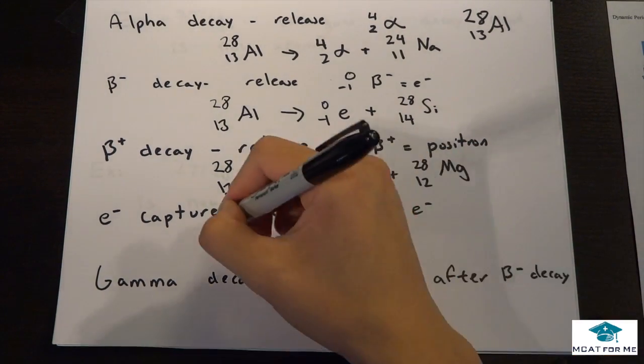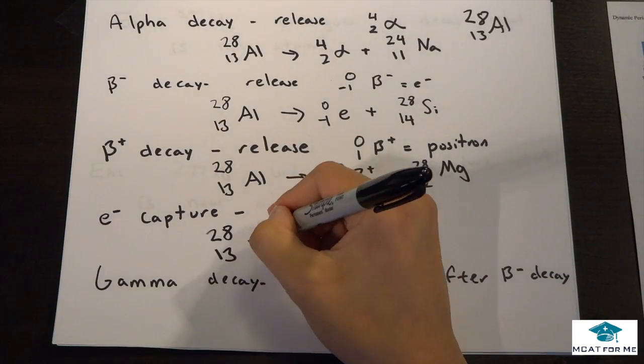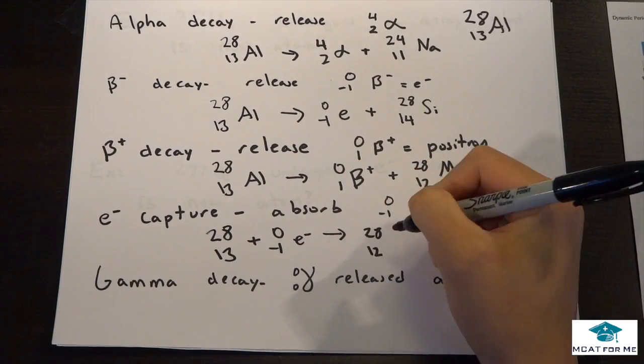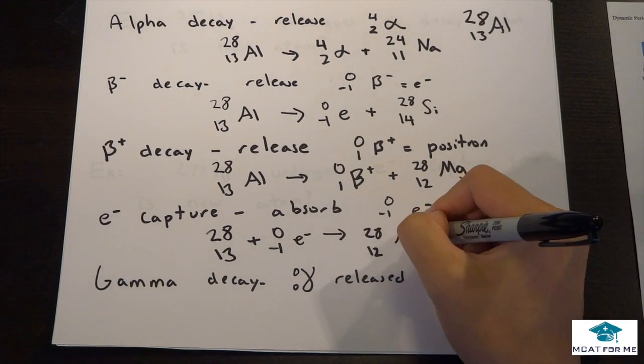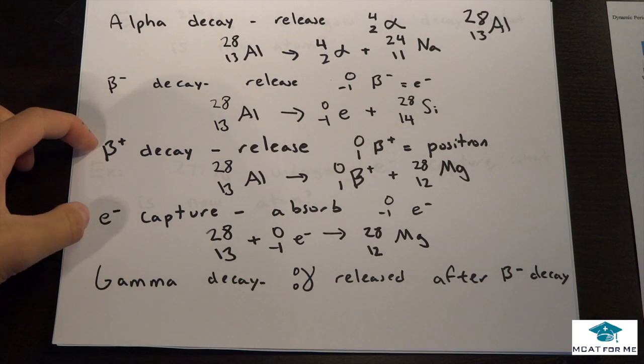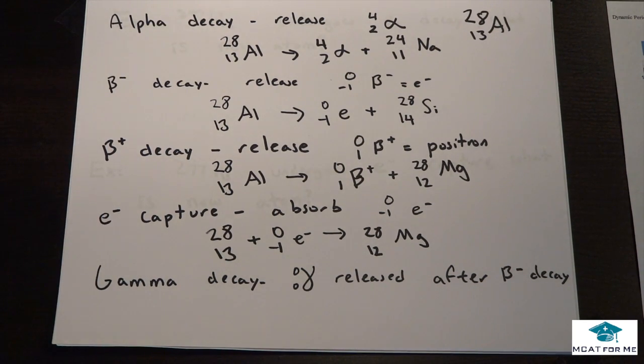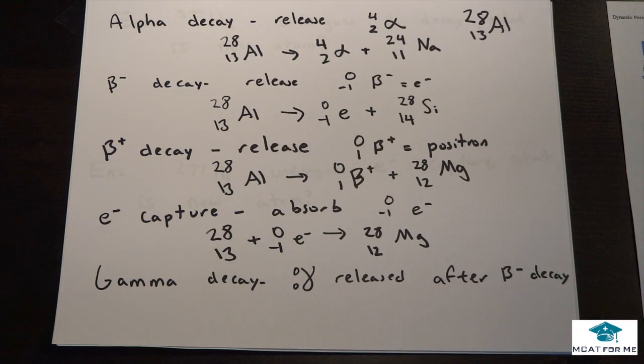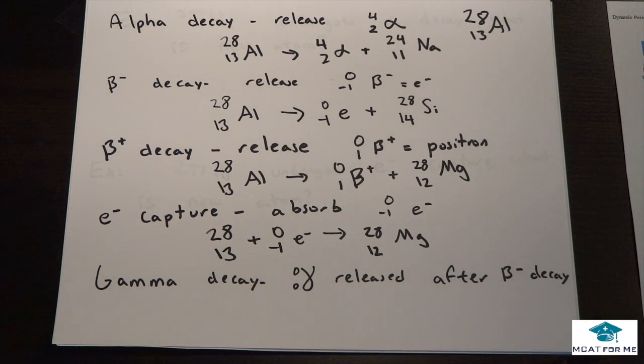And electron capture, so this one's a little bit different. We're actually absorbing an electron, so that's why it would be on the left side. So now we just can do easy subtraction, 28 and 12. And so that would give us magnesium. And we can see that beta plus and electron capture give us the same molecule, so that's something that they may test. They may say, if we start off with aluminum 28, which two would give us the same? And you would know that beta plus decay and electron capture would.